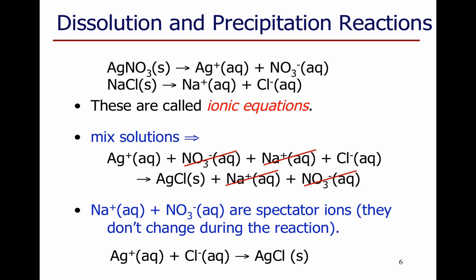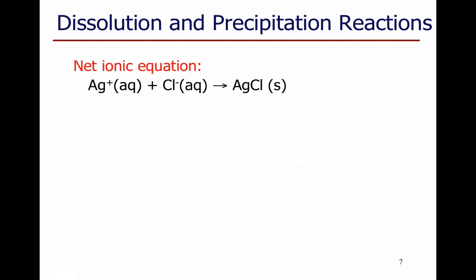And all I'm left with are the things that are reacting. The silver ions and the chloride ions in aqueous solution are coming together and forming the solid silver chloride. So I'm left with a net ionic equation, which shows me only the things that are actually happening during the reaction.